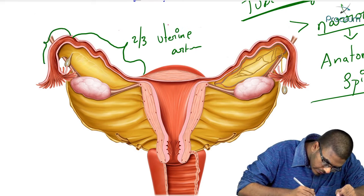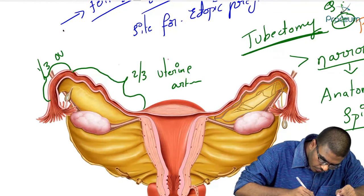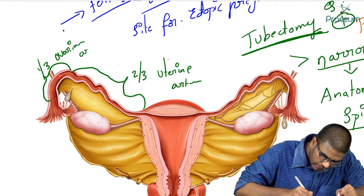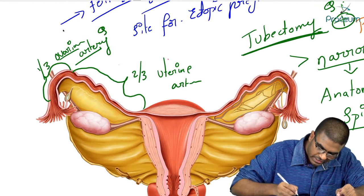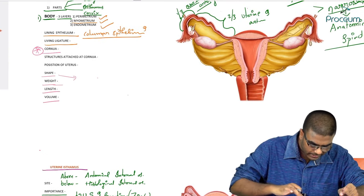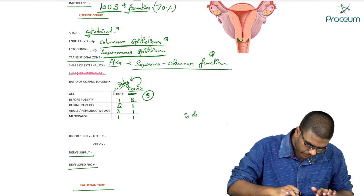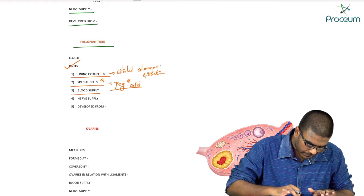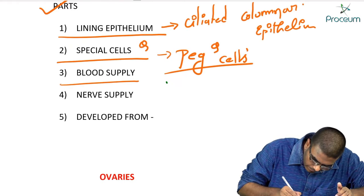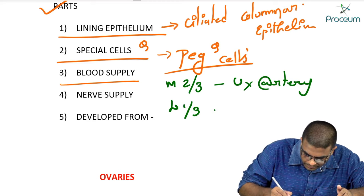The lateral one-third of the fallopian tube gets its blood supply from the ovarian artery. To summarize: medial two-thirds — uterine artery; lateral one-third — ovarian artery.